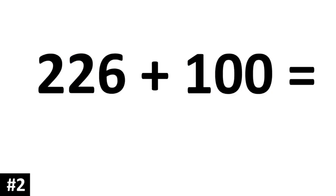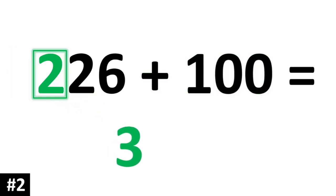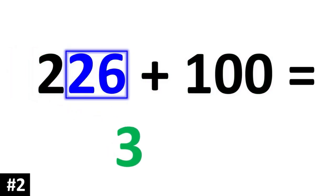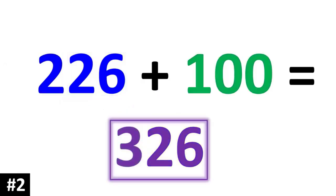Next example: 226 plus 100. To add by 100 means the hundreds digit of 226 goes up by 1. So that 2 is going to become a 3. The other numbers stay the same, so we have a 3 followed by 26, or 326.